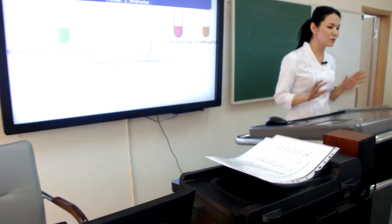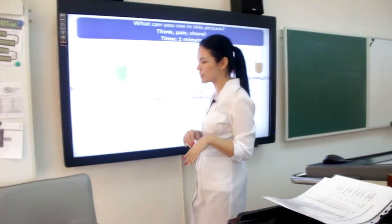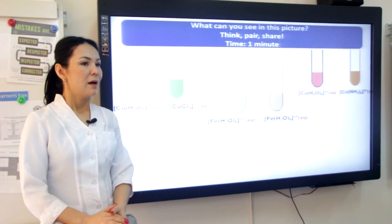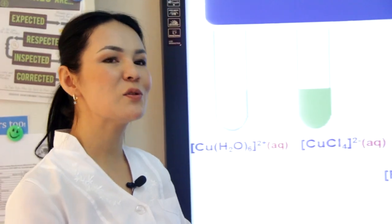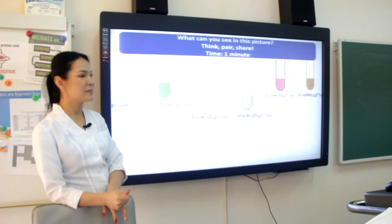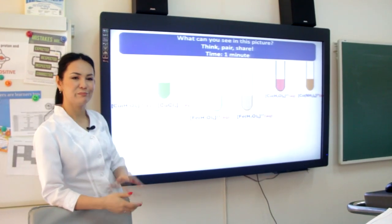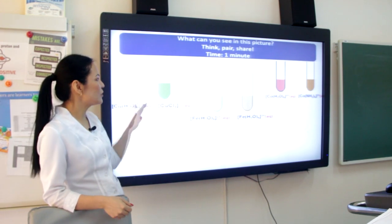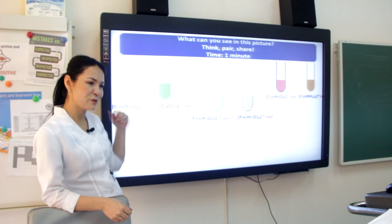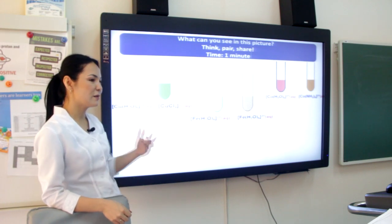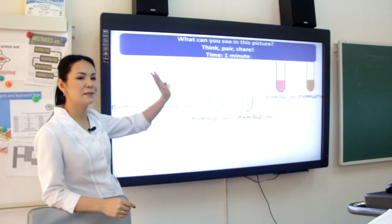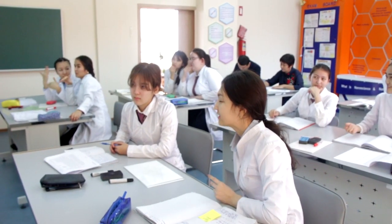We're done with recalling the knowledge. Just leave your whiteboards. Look at this picture and try to guess the lesson topic. What can you see in this picture? Color change. Think for one minute, then share your thoughts with your partner, then tell us why the color changed — the first one, the second one, the third one.